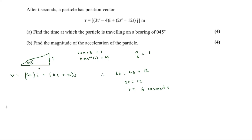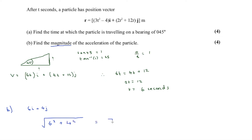Part b asks for the magnitude of the acceleration. We differentiate velocity once more to get acceleration a = 6i + 4j. To find the magnitude we use Pythagoras: √(6² + 4²) = 7.2 meters per second squared.